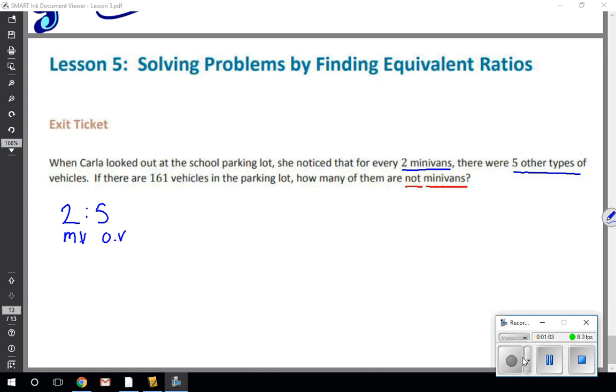So I'm going to do MV for minivans and OV for other vehicles. For my tape diagram, the minivans ratio is represented by two. My other vehicles or OV is five: one, two, make it a little bit longer here, two, three, four, five. Now it said the entire parking lot there are 161 vehicles.